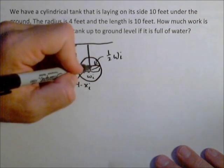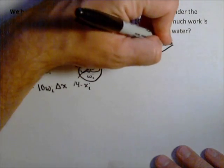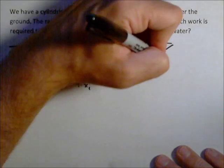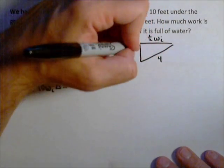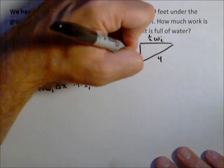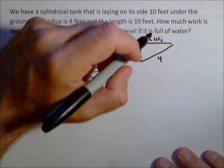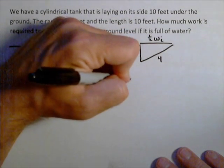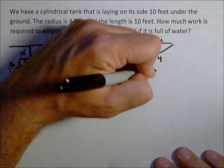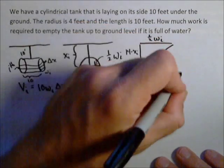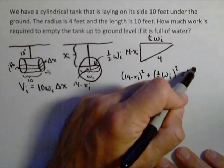So I have a right triangle where I know three of the sides. I'm making a bigger picture so you can see it. That's my triangle here. I know this side is 4, I know this side is one half w sub i, and I know this side is 14 minus x sub i. So I've got the Pythagorean theorem here. So I have (14 minus x sub i) squared plus (one half w sub i) squared equals 4 squared.